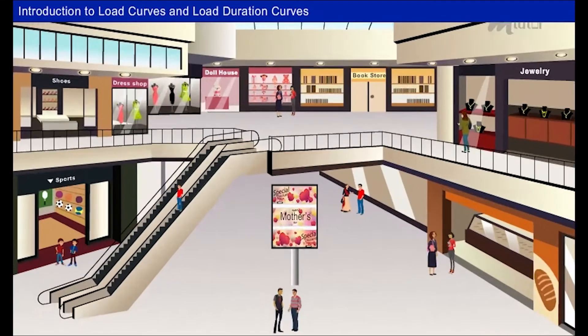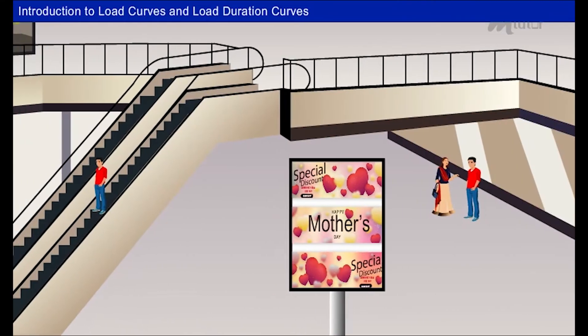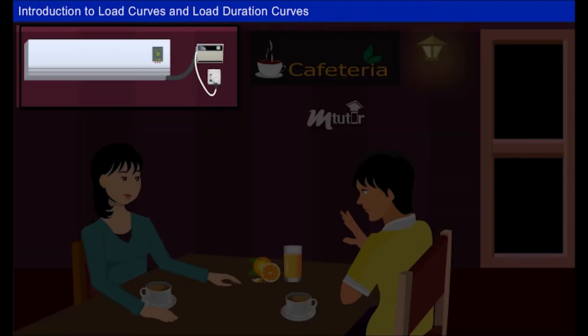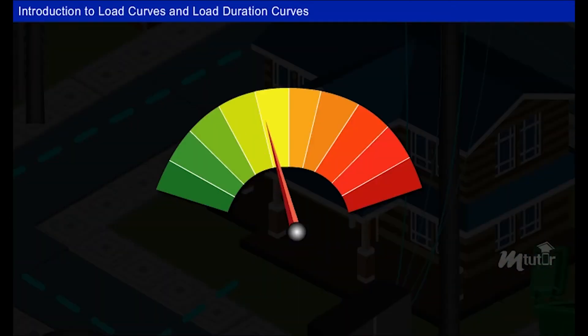Commercial loads like lighting for shops, advertisements and electrical appliances used in shops and restaurants, and the municipal loads that consist of street lighting. The power consumption by these loads keeps on varying day and night and also from season to season.